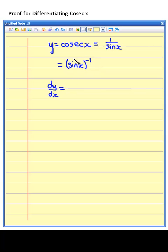We bring the minus 1 down to the front, so we have minus 1, sine x in brackets. Then we reduce the power by 1, so we have minus 2, and then we multiply by the bracket differentiator, so if we differentiate sine x, we get cos x.